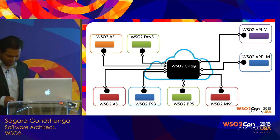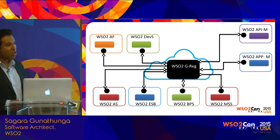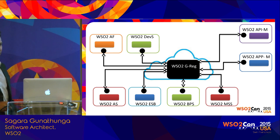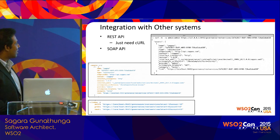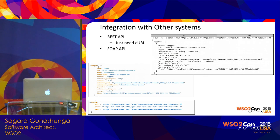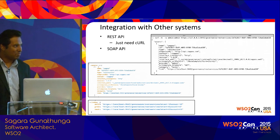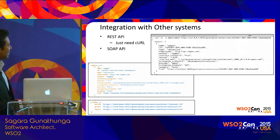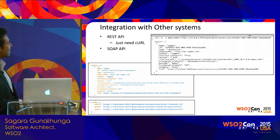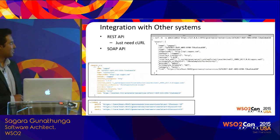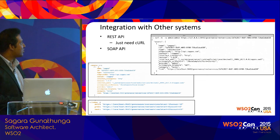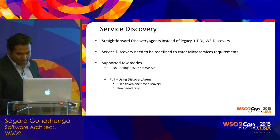For integrating with third-party systems, we have developed a brand new REST API. You only need curl and basic code — through curl you can achieve all third-party system integrations. We also still have the SOAP API available, but we advise using the REST API as far as possible.